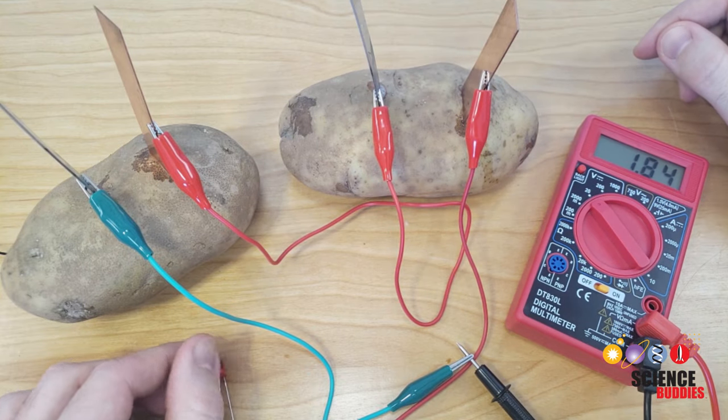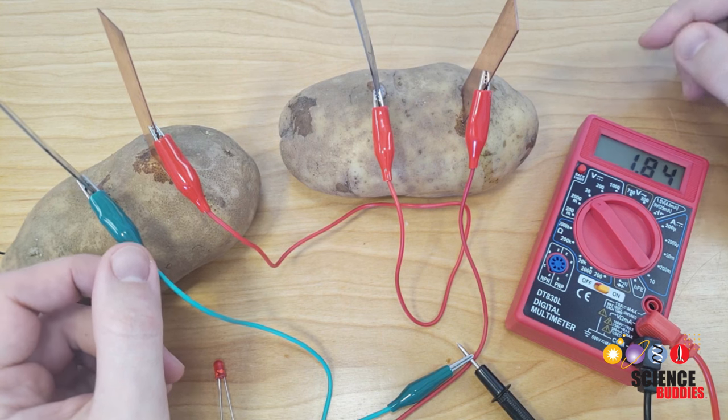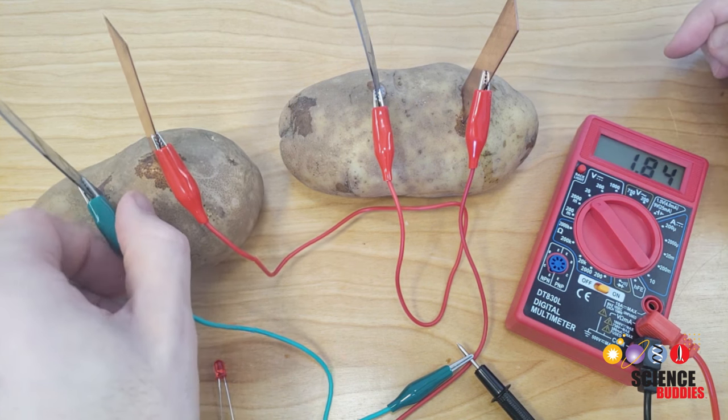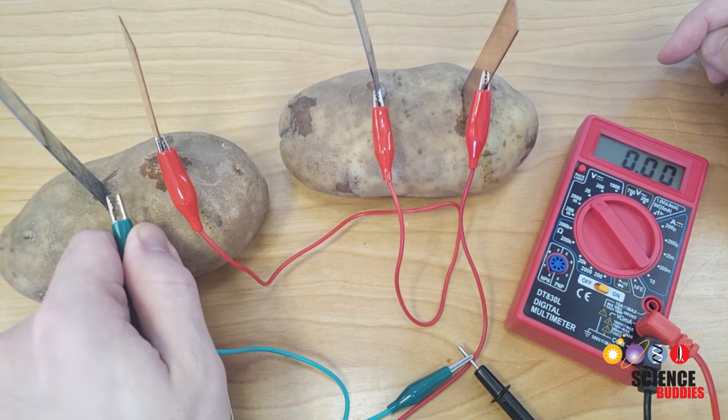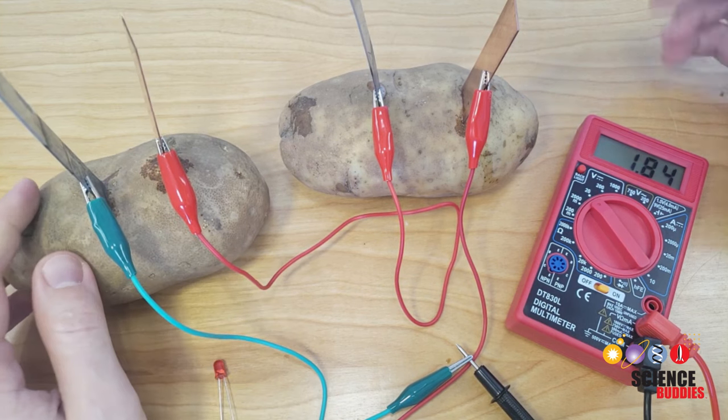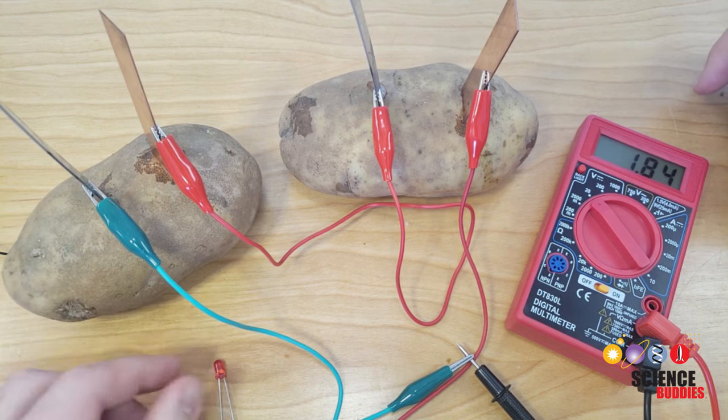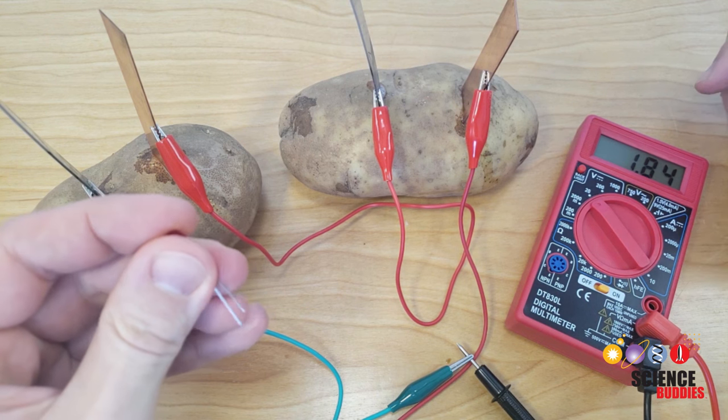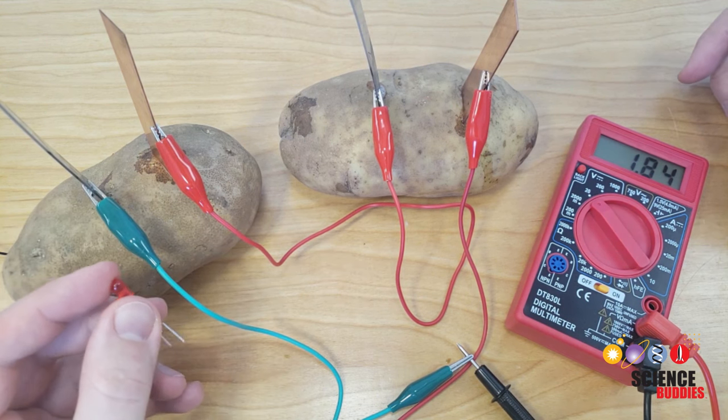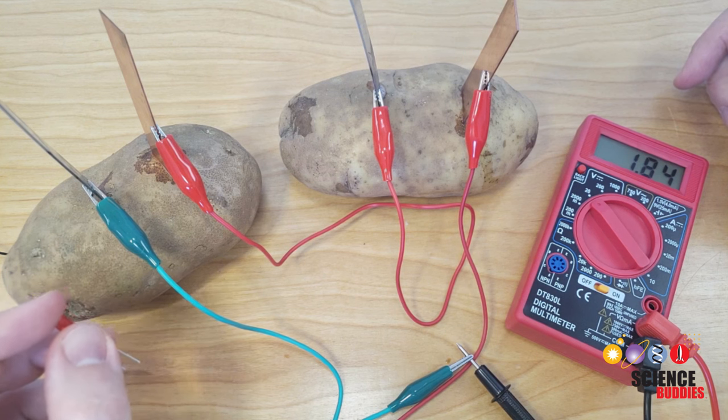In terms of things to look out for, remember that you need to look out for loose connections and keeping your positives and negatives straight. If all of a sudden you are seeing a zero on your multimeter, make sure you do not have an alligator clip loose somewhere. Your potatoes may also dry out after an extended period of use, in which case your readings will start to drop. And remember to keep track of your positives and negatives, especially for the LED and the buzzer, as they do have a positive and negative side. So if you connect them backwards, they're never going to work no matter how many potatoes you have.